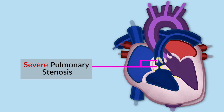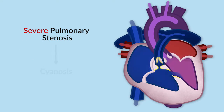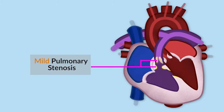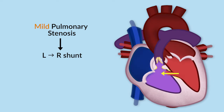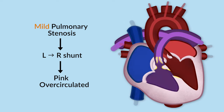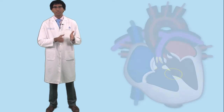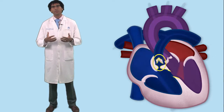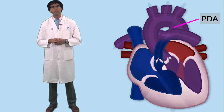If the pulmonary stenosis is severe and it's easier for blood to go to the body than to go to the lungs, that causes cyanosis because it causes a right-to-left shunt at the VSD. If the pulmonary stenosis is fairly mild and it's easier for the blood to go to the lungs, then the VSD is left-to-right and the patient can be quite pink and over-circulated and develop heart failure. So tetralogy of Fallot can exist along a spectrum — from patients who are over-circulated and behave like patients with large VSDs, to patients with critical pulmonary stenosis who are dependent on a patent ductus arteriosus or a neonatal shunt for survival.